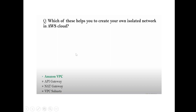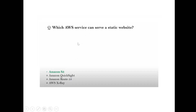Question: Which of these helps you create your own isolated network in the AWS cloud? Answer: Virtual Private Cloud. Question: Which AWS service can serve a static website? Answer: S3 — by default, S3 is used for static websites.